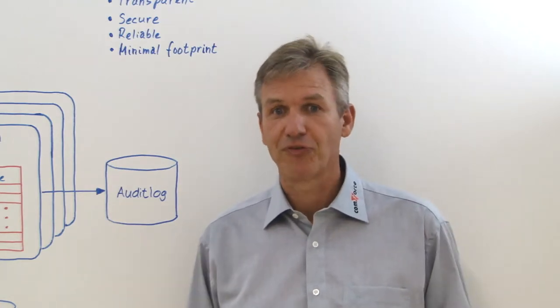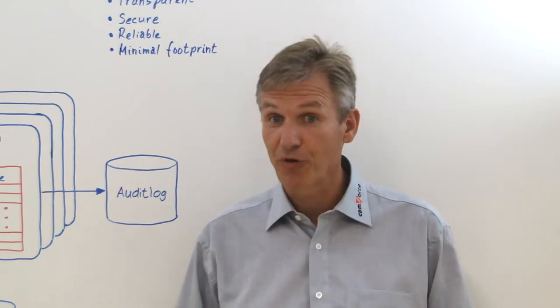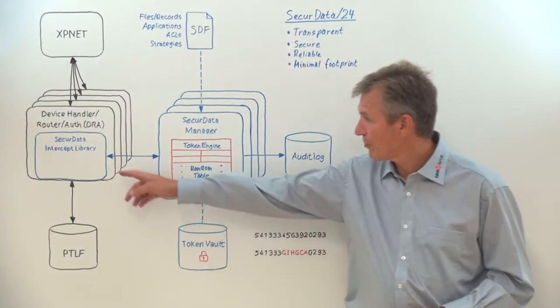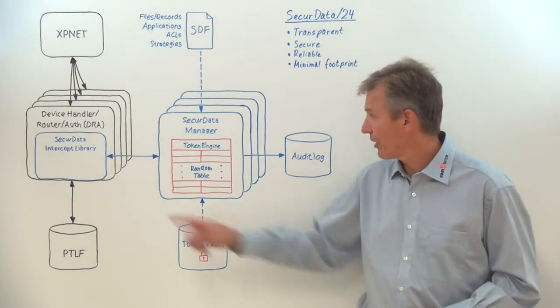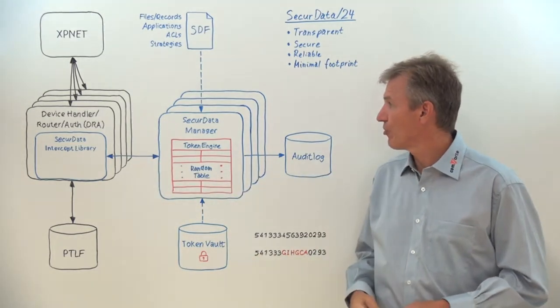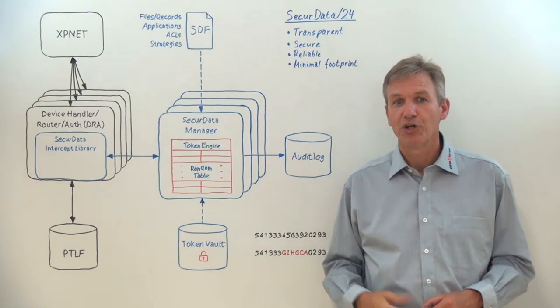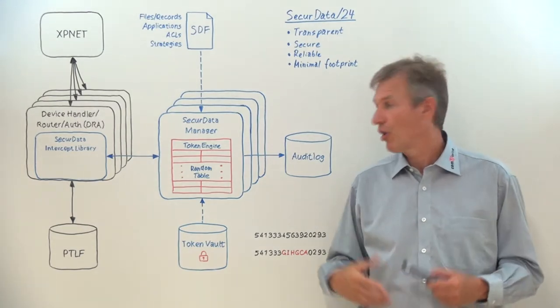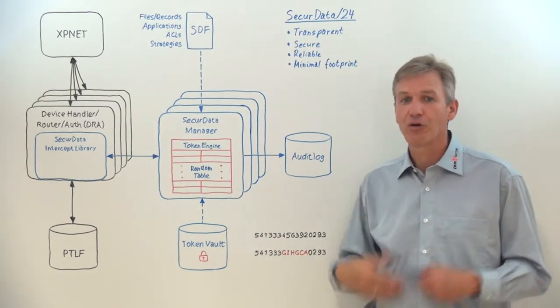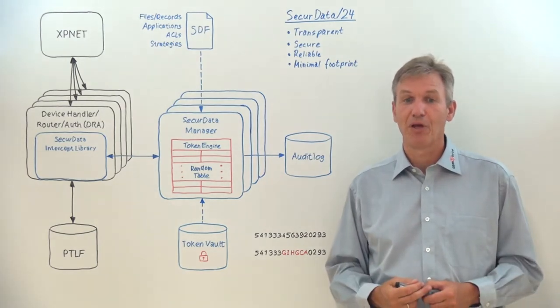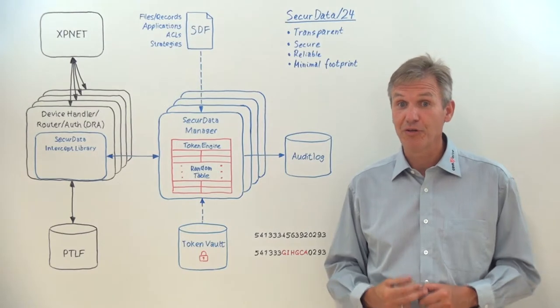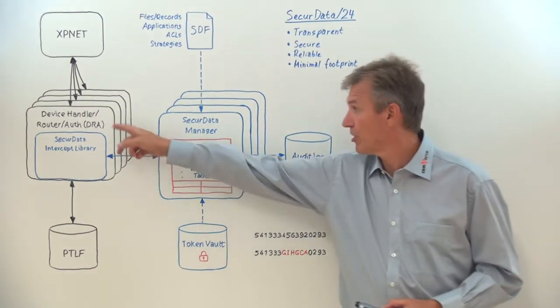Likewise, whenever a record is about to be read from the PTLF, the intercept library will intercept that call. It will again communicate to the secure data manager to process the buffer, locate the tokens and convert them back to the original PAN. The record is then returned to the DRA.